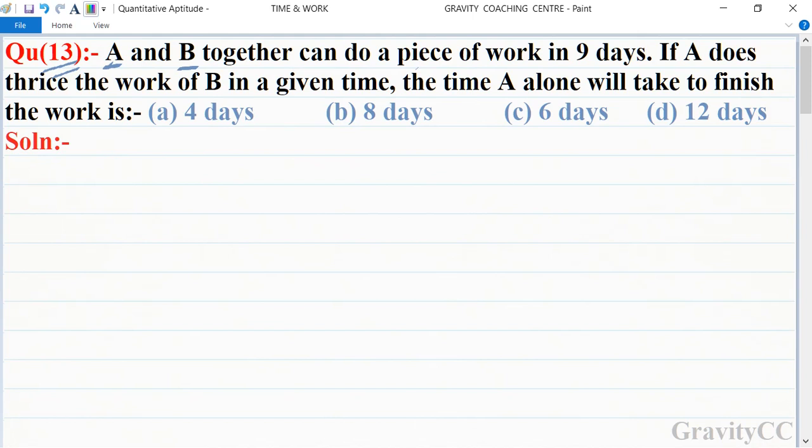In this question, A and B can complete the work in nine days, and in a given time A can do thrice the work of B. We have to find out how many days A alone can complete the work.